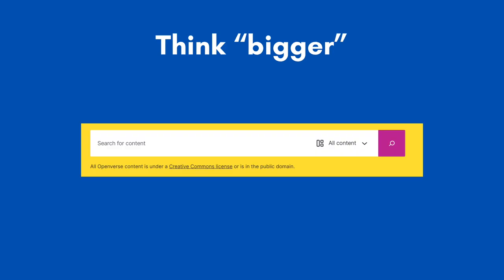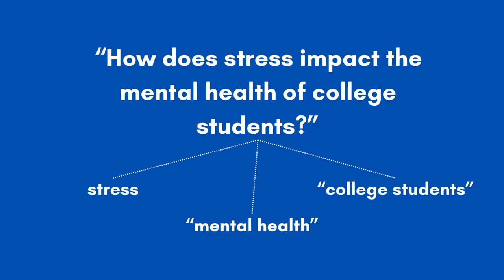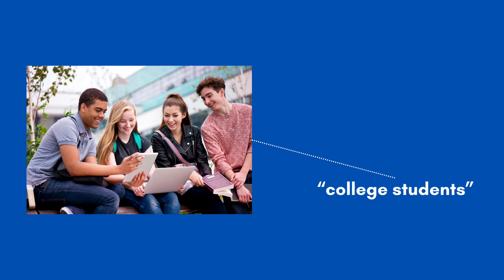Searching in OpenVerse is a little different than searching for articles or books in the UB Library website — you have to think a bit larger. If your project is about how stress impacts the mental health of college students, focus on your main keywords. Since your research question involves college students, that would be a great thing to search for — it's a blanket term. However, you may want to choose images that would convey stress instead of smiles, so always remember context.